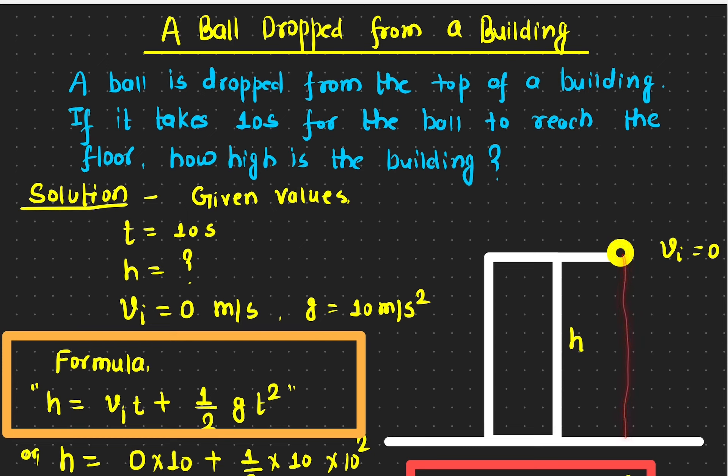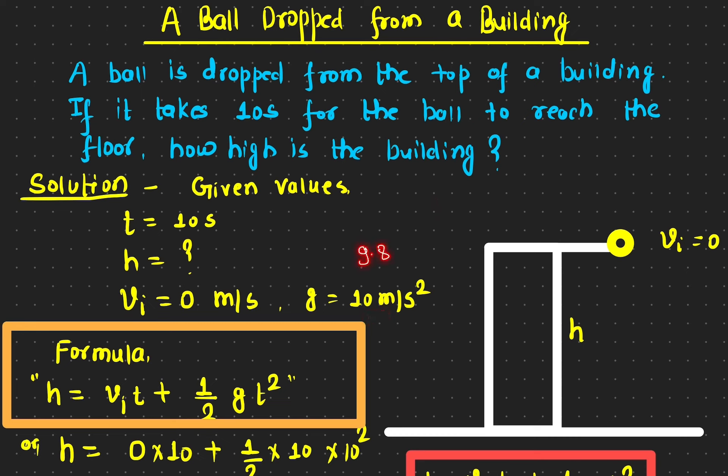You are at the top of a building and you drop the ball, then you start measuring the time. The time it takes from the top of the building to the floor is 10 seconds. The initial speed of the ball is zero meters per second because it is starting from rest, and the acceleration due to gravity g is 10 meters per second squared — an approximation of the actual 9.81 m/s².